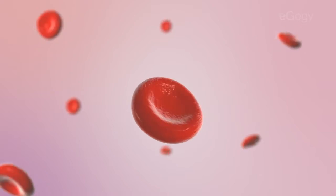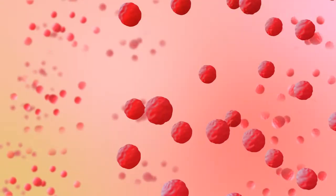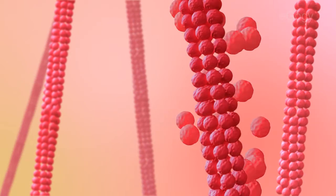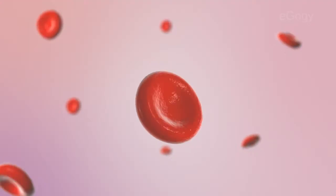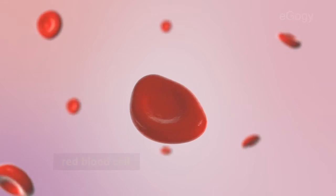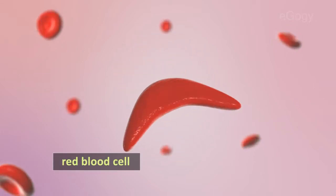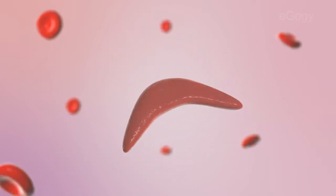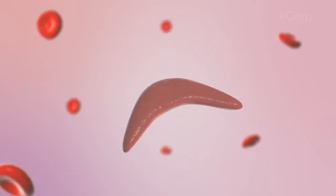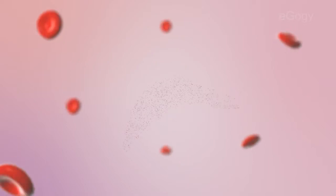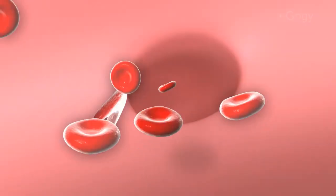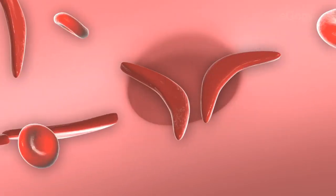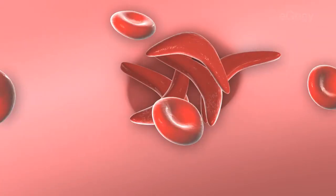Sickle cell anemia is an inherited disorder of the hemoglobin in blood. In sickle cell anemia, the red blood cells become rigid and sticky and are shaped like sickles. The sickle-shaped red blood cells break apart easily. These irregularly shaped cells can get stuck in small blood vessels, which can slow or block blood flow and oxygen to parts of the body.